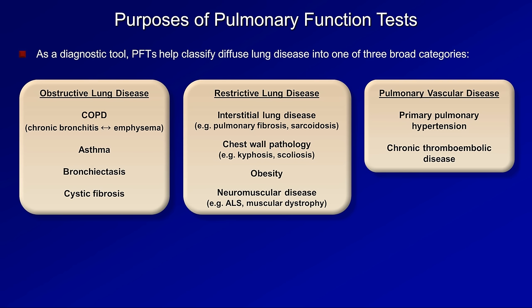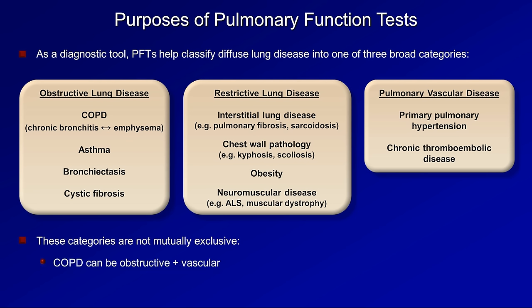For those viewers who already have some prior knowledge of PFTs, inclusion of pulmonary vascular disease in this discussion may seem unexpected, since classic teaching of PFTs usually omits this last category. However, as will be discussed in the fourth video on DLCO, pulmonary vascular disease can display a specific abnormal pattern on PFTs, of which one should be aware. Remember also that these categories are not mutually exclusive. For example, COPD can present with both obstructive and vascular findings on PFTs, and sarcoidosis, while classically restrictive, can present with any combination of all three.